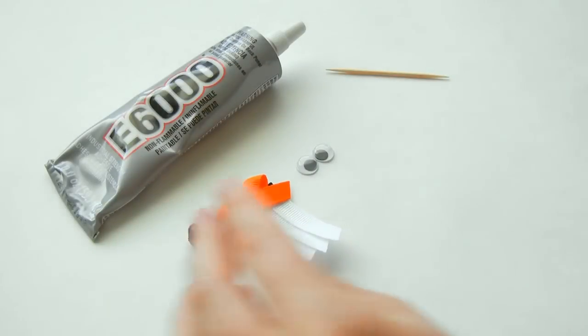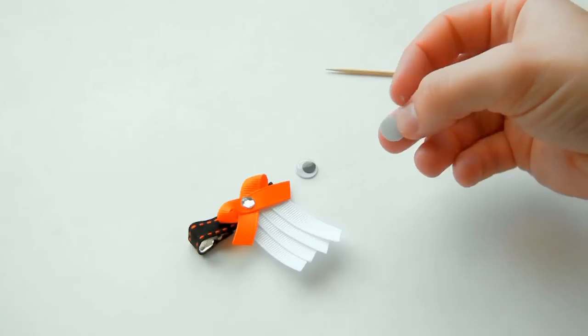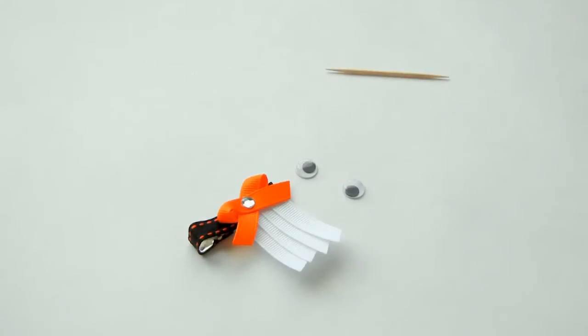Now for the googly eyes you can use hot glue or you can use E6000. E6000 is a lot stronger and it's generally better when you're using plastic or a different type of material that's not ribbon or fabric. And to add this glue to the googly eyes I use a toothpick.